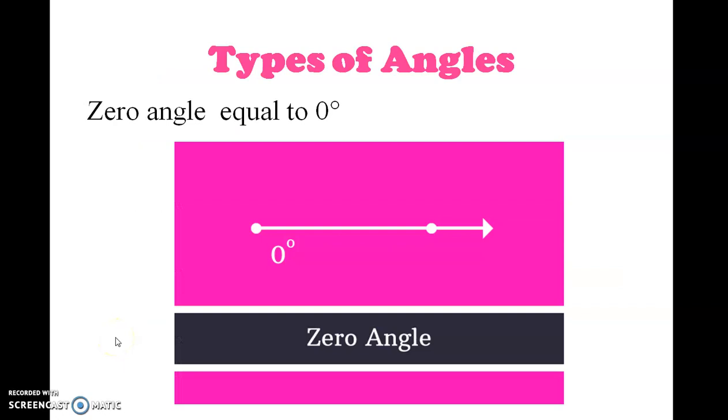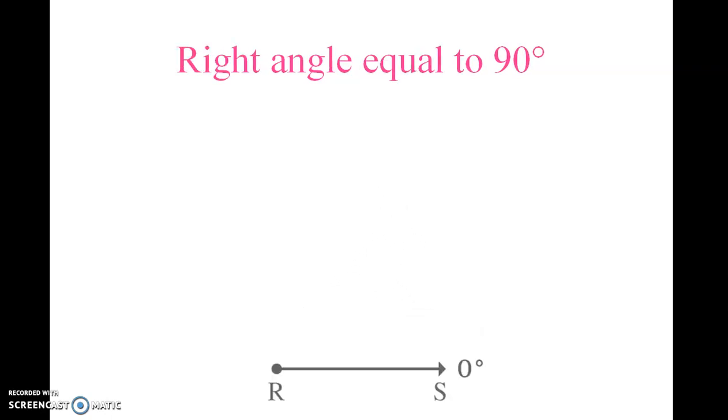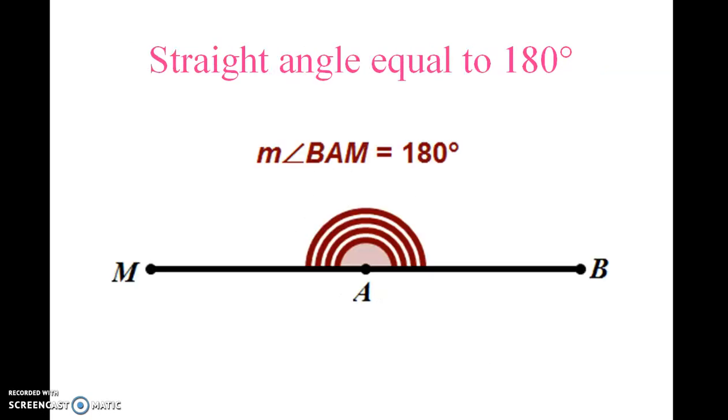Now let us see the types of angles. Zero angle equals zero degrees. Next one is acute angle, less than 90 degrees. Next one is right angle, equal to 90 degrees. Now let us see the obtuse angle, between 90 degrees and 180 degrees.